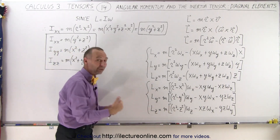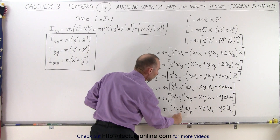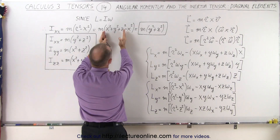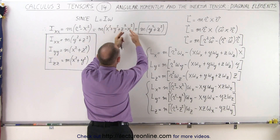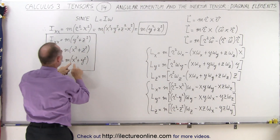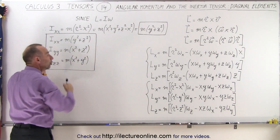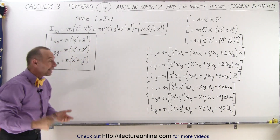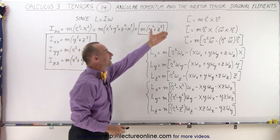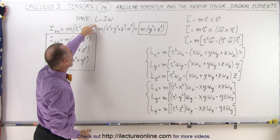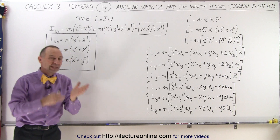On the third term, finding the moment of inertia about the z-axis, it's r squared minus z squared. Since r squared is x squared plus y squared plus z squared, we get minus z squared, the z squareds cancel out, and we're left with m times x squared plus y squared. So here we have the three diagonal elements of the inertia tensor, derived from the concept of angular momentum where angular momentum is the moment of inertia times omega — and that's how we solve for the diagonal terms.